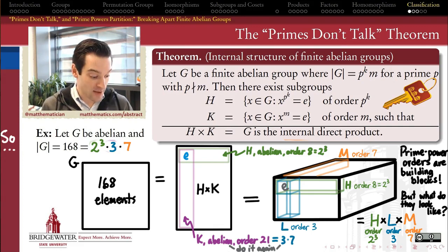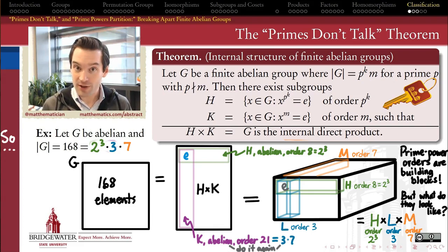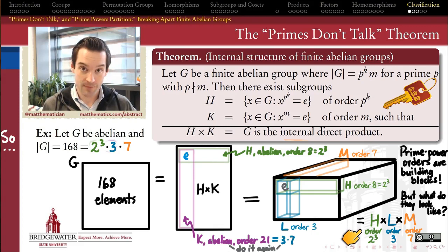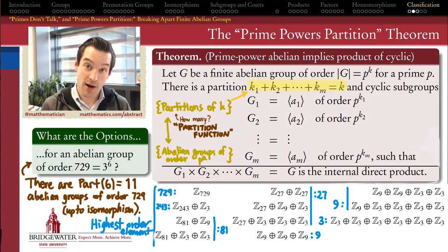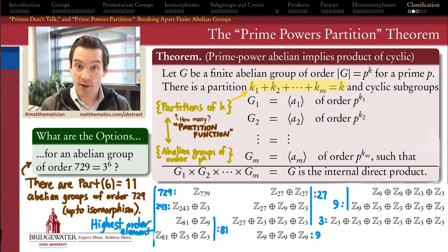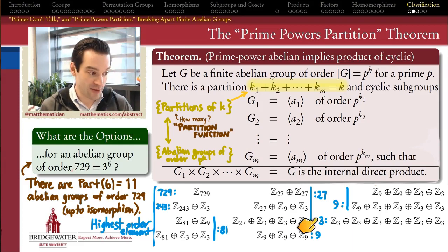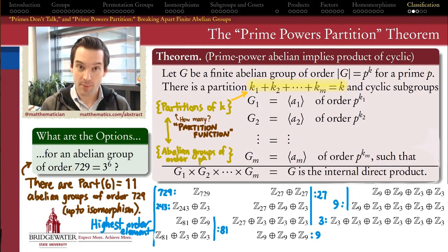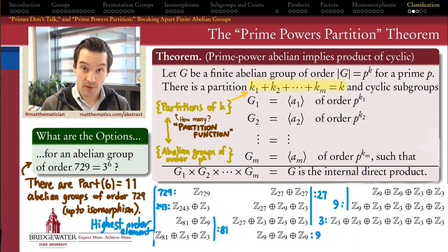The ingredient that was missing is: we know all groups of order 3 and all groups of order 7 are cyclic, because 3 and 7 are prime. But what about all abelian groups of order 8 — what about the prime powers? That was the next ingredient: the Prime Powers Partition theorem. It told us that every abelian group whose order is a prime power can be completely classified into a list of possibilities, just by taking the different partitions of the power of that prime. Every different partition gives a different structure for the group up to isomorphism.